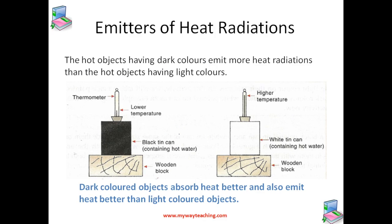Now let us look at emitters of heat radiations. The amount of heat which a hot object can emit by radiation also depends on its color. Hot objects having dark colors emit more heat radiations than hot objects having light colors. To understand this, we will perform one more activity.